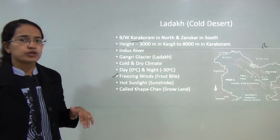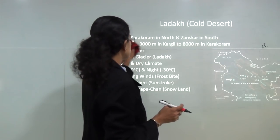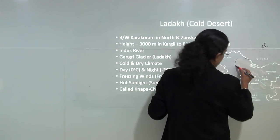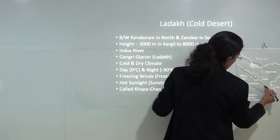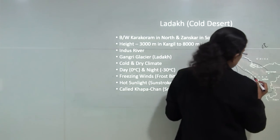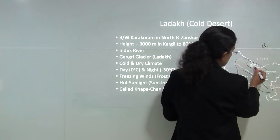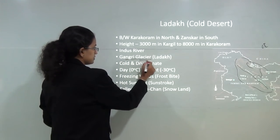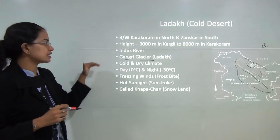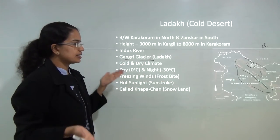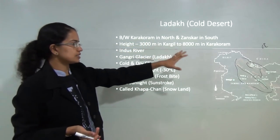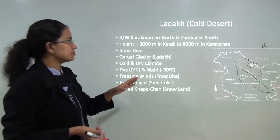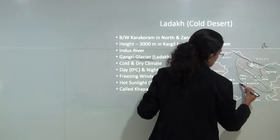The next case study is of a cold desert — Ladakh. Looking at the map of Jammu and Kashmir, we have the Ladakh region with the Ladakh range passing through it. The main rivers include the Shyok, and you have the Siachen glacier. Another important glacier is the Gangri glacier. The Indus river and its tributaries flow through here. The height of the Ladakh region varies from 3,000 meters in Kargil up to 8,000 meters in the Karakoram range.